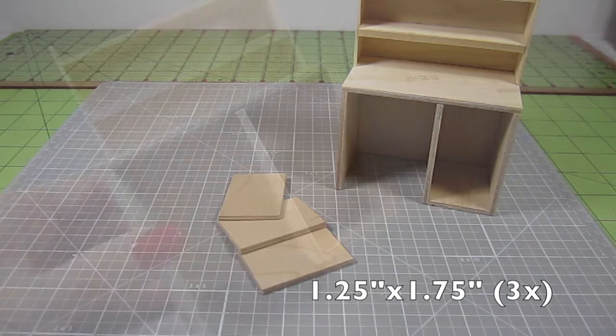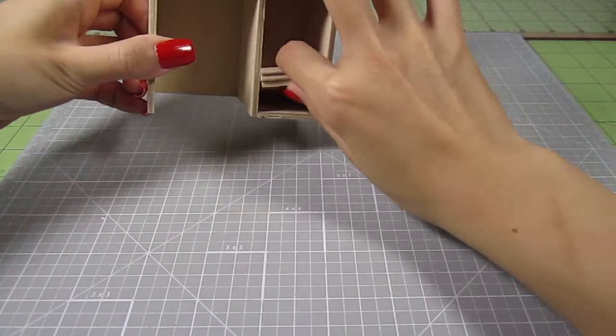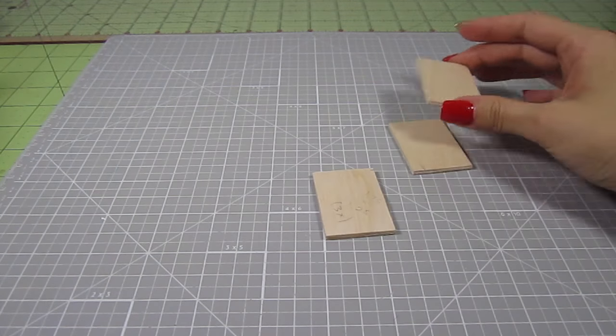I first cut out 3 1 1⁄4 by 1 3⁄4 inch rectangles for the drawer bottoms. This means we'll have 3 drawers in this section. 2 small ones and 1 big one.